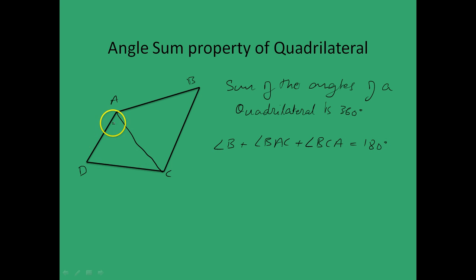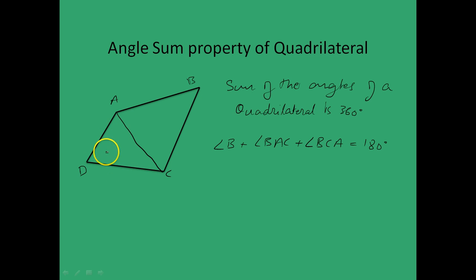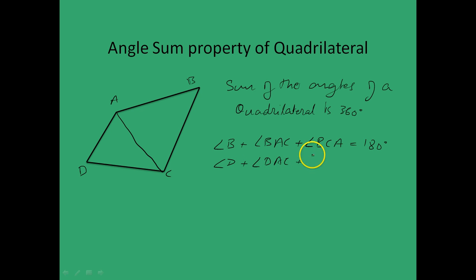And also, in triangle ADC, angle D — there is no ambiguity — and using the fact that the sum of the angles of a triangle is 180 degrees, we have angle D plus angle DAC plus angle DCA is equal to 180 degrees.